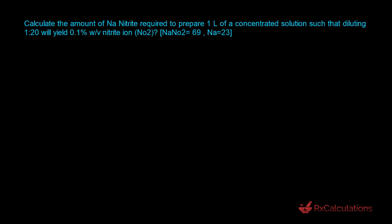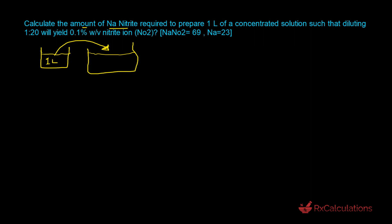Let's start off with a quick schematic to give us a physical picture of what's actually going on. The goal is to prepare a one-liter concentrated solution. We need to determine the amount of sodium nitrite to prepare this solution, and then we take the entire one-liter volume and dilute it down to a much larger solution that should have a concentration of 0.1 percent weight by volume.